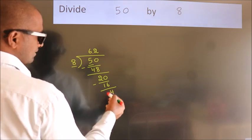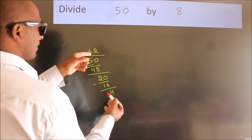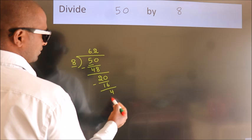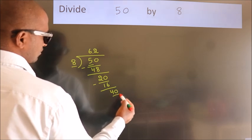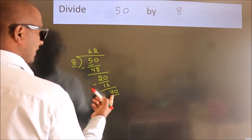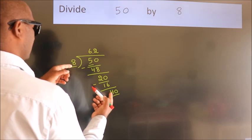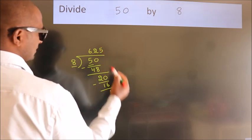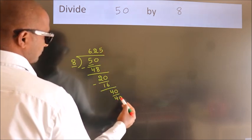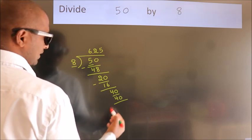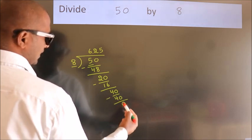After this, we already have the decimal. So directly take 0. So 40. When do we get 40 in the 8 table? 8 times 5 equals 40. Now we subtract. We get 0.